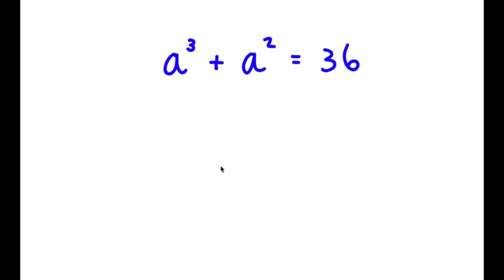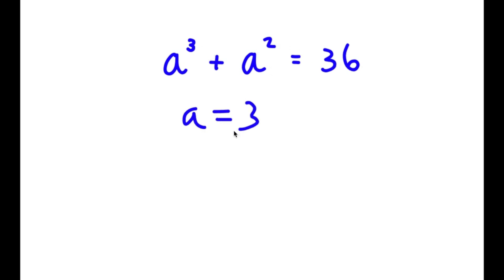In this problem, I have a to the power of 3 plus a squared equals 36. To find all solutions, I need to first find one solution by plugging in some numbers. Plugging in 1 gives 2, which is wrong. Plugging in 2 gives 12, which is wrong. Plugging in 3 gives 27 plus 9, which is 36. So a equals 3 is one solution.